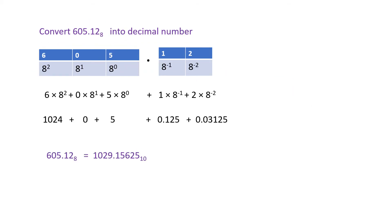Adding the results of this multiplication, we get the end result: 100101.101 in binary is equal to 37.625 in decimal. Now we will convert an octal number to decimal. For 605.12 octal, the positional values to the left of the octal point are increasing powers of 8 and to the right are decreasing powers of 8. So, 6×8² + 0×8¹ + 5×8⁰ + 1×8⁻¹ + 2×8⁻² gives us 605.12 octal equal to 1029.15625 in decimal.